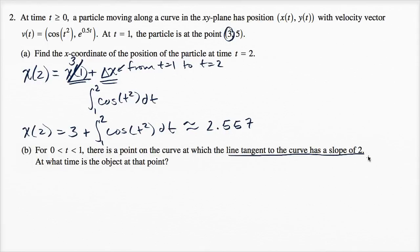So the slope of the tangent line is 2. That means dy/dx equals 2. Well, they don't directly give us the derivative of y with respect to x, but they do give us the derivative of x with respect to t and the derivative of y with respect to t.